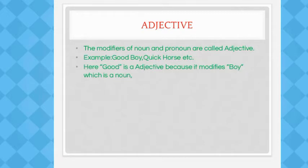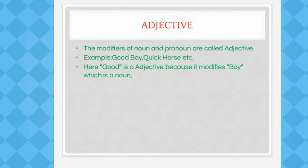The modifiers of noun and pronoun are called adjectives. For example, 'good boy' — 'good' is an adjective because it modifies 'boy', which is a noun. 'Quick horse' — 'quick' is an adjective because it modifies 'horse', which is a noun.